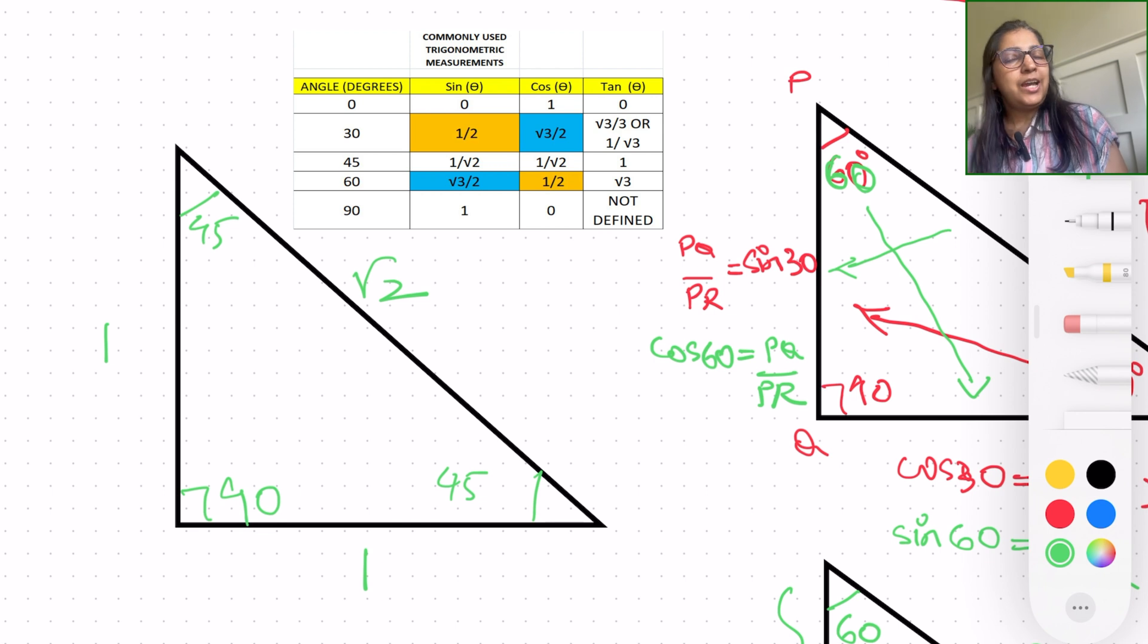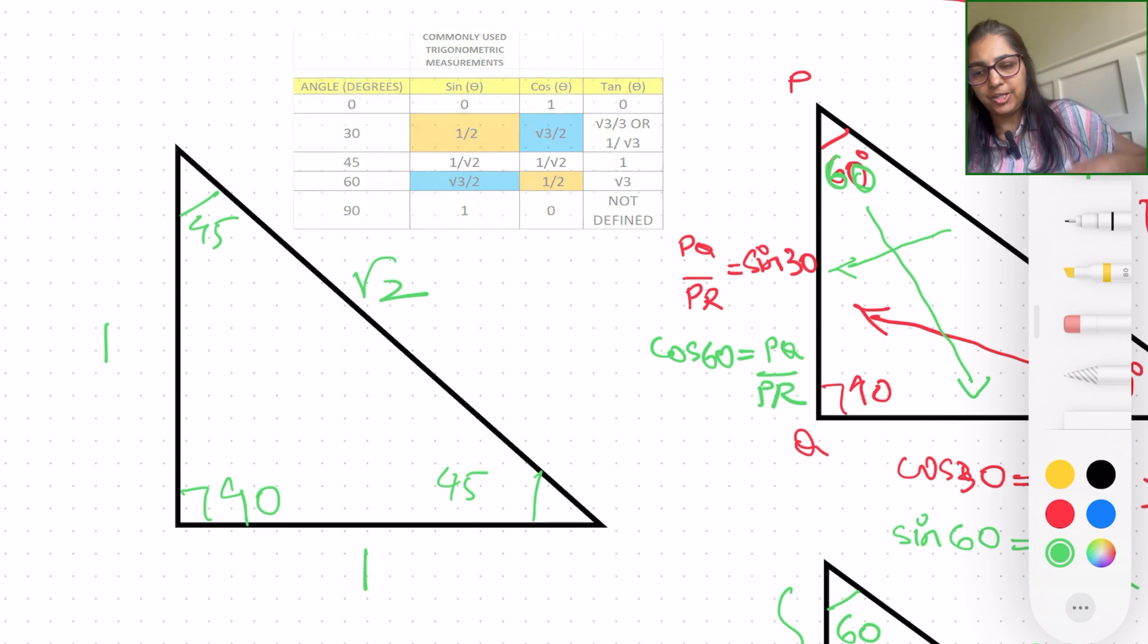So obviously, from this, I leave it on you. I will share the chart with you, so you can compare your answers. What is sine 45? What is cosine 45? And what is tangent of 45? You can write it down for yourself and match it with the chart that I share with you towards the end of the video.